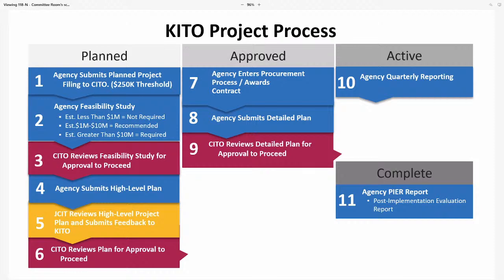After that, there's a criteria based on project cost — under a million, between one and ten million, or over ten million — which determines whether a feasibility study is required. Some projects discussed today went through the feasibility study process. Reports are then sent to one of three branch CITOs in the state, each representing a branch of government, who review the feasibility study and give approval to proceed. The agency then prepares and submits the high-level project plan.